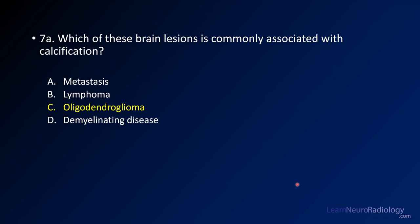The multiple choice question for this case is: which brain lesion is commonly associated with calcification? Oligodendrogliomas are associated with calcification, as are PXAs like we saw here. It's rare for metastases or lymphoma to calcify — lymphoma usually only calcifies if it's been treated. Demyelinating disease would also rarely show calcification. So if you see calcification, think oligodendroglioma.